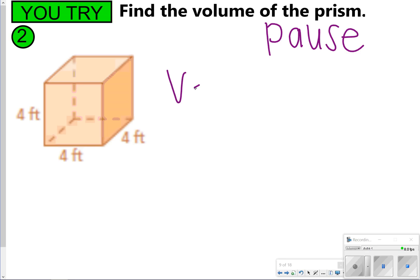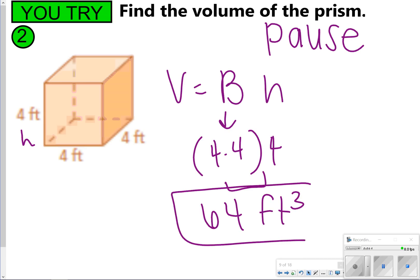All right, so once again, we're finding area of the base times height. My base is 4 by 4, and my height is also 4. 4 times 4 times 4 is going to give me 64 feet cubed. How did you do?